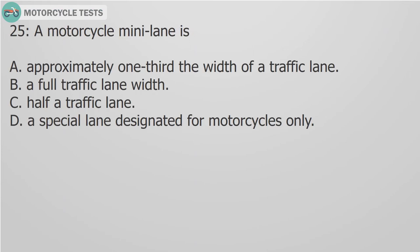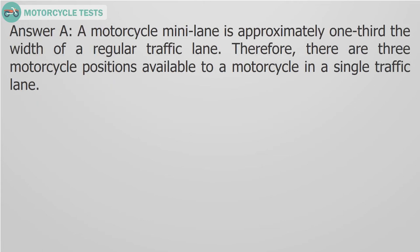Question 25. A motorcycle mini lane is: A. Approximately one-third the width of a traffic lane. B. A full traffic lane width. C. Half a traffic lane. D. A special lane designated for motorcycles only. Answer A. A motorcycle mini lane is approximately one-third the width of a regular traffic lane. Therefore, there are three motorcycle positions available in a single traffic lane.